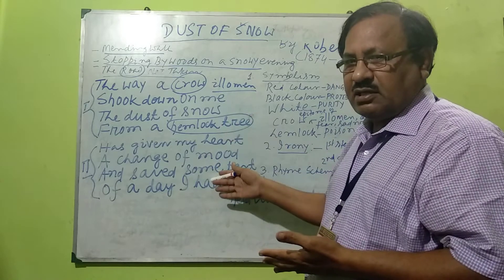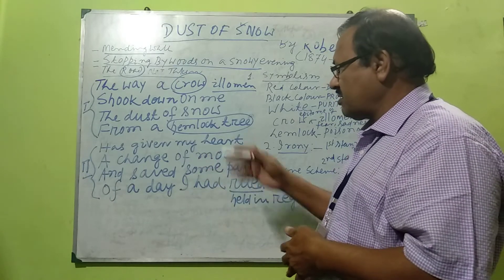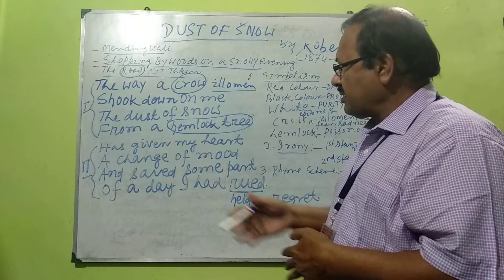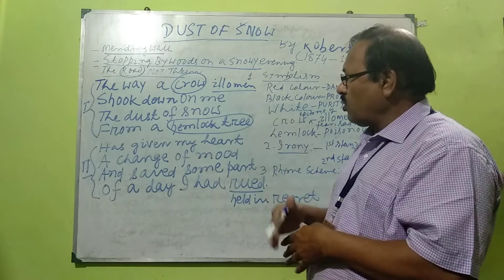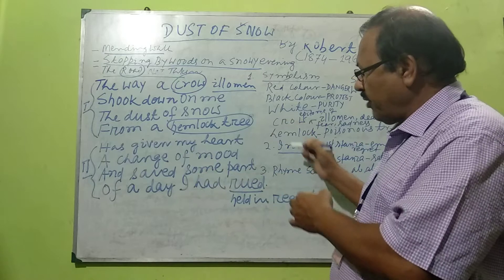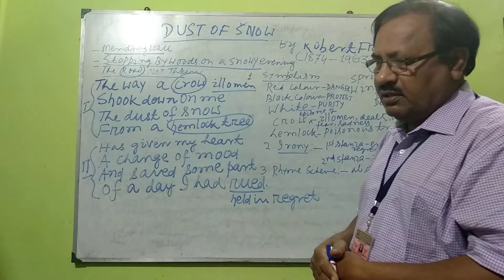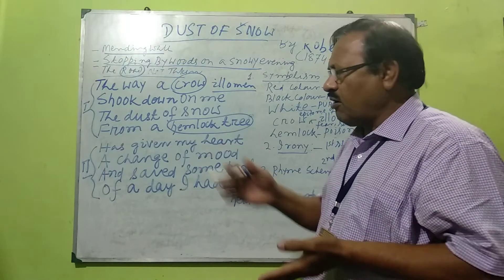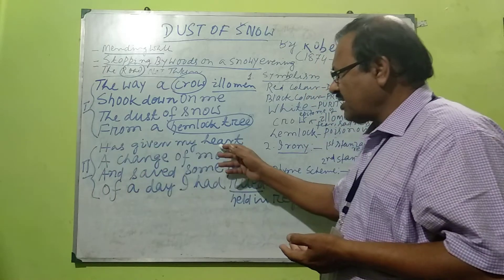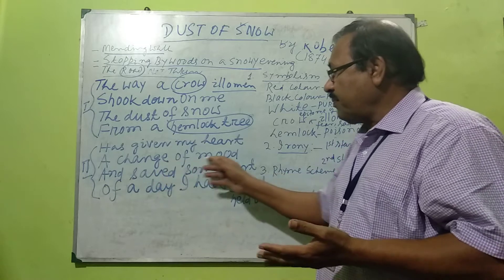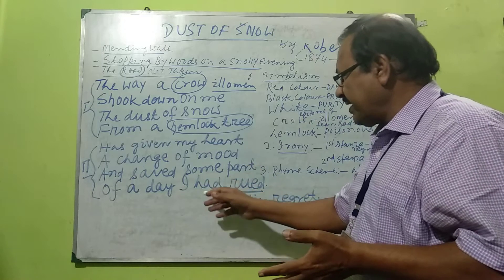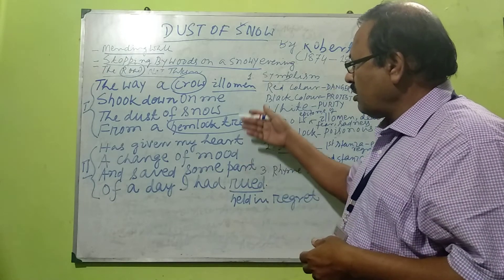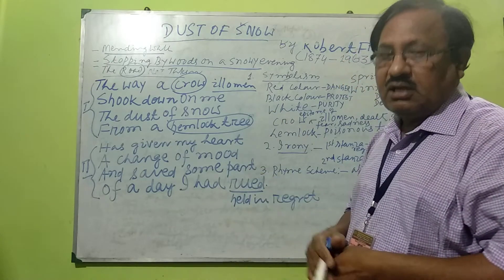But the poet's mood changed in the second stanza: 'Has given my heart a change of mood.' The sitting of a crow on the hemlock tree is just an ordinary phenomenon, but the poet took it seriously. He initially thought it was ill omen, and all negative thoughts came to his mind. But in the second stanza, he felt delighted — a change of mood. And saved some part of the day I had rued. Rued means having regret, and here regret is replaced by happiness and satisfaction.